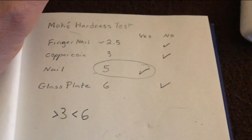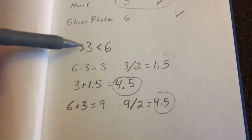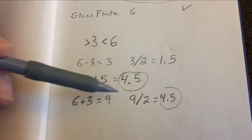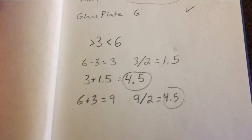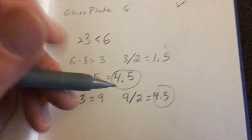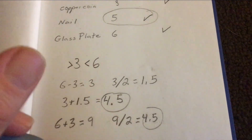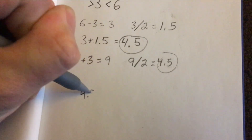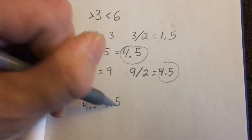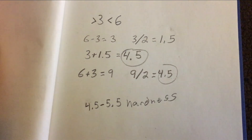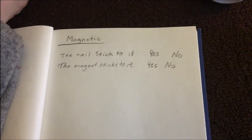I'm going to compute the average to get a roundabout figure. I calculated it two different ways — a longer way and a short way. I'm only using two numbers, so it's about four and a half. But we know the nail did take a slight bit of hard scratching to get it to scratch, so I'm going to say the hardness is four point five to five point five on the Mohs scale.